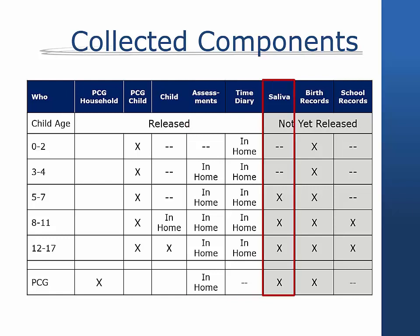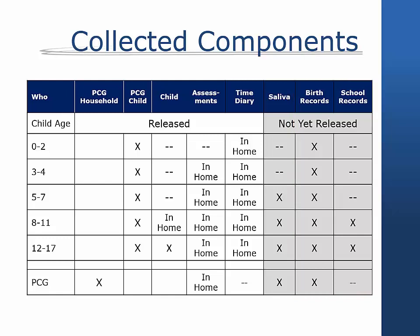All PCGs and children aged five and up were eligible for the collection of the saliva sample. Consent for administrative linkages was also sought. PCGs were asked for consent to collect their own and all children's birth record information and to collect school records for all children between the ages of 8 and 17. The number of records associated with each study component is not dependent on other components, so there are some families who have data on the PCG child file but not on the child interview file, and so on.